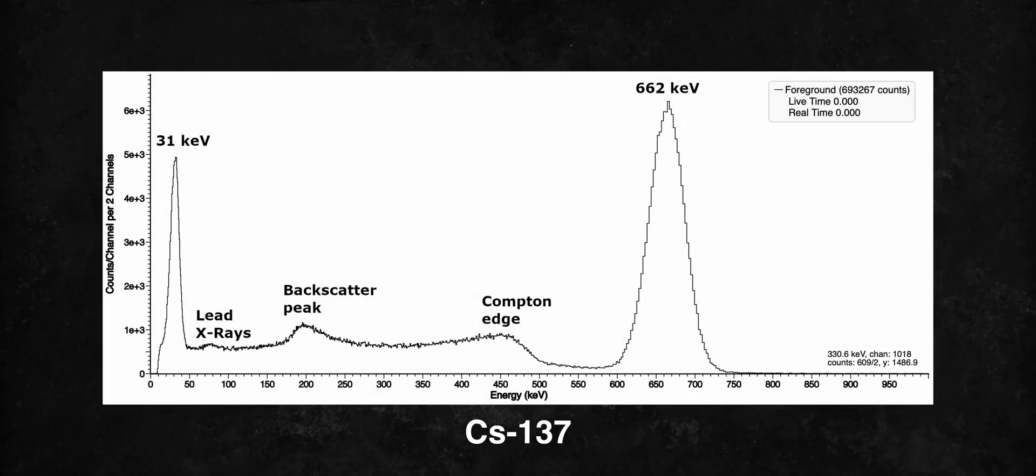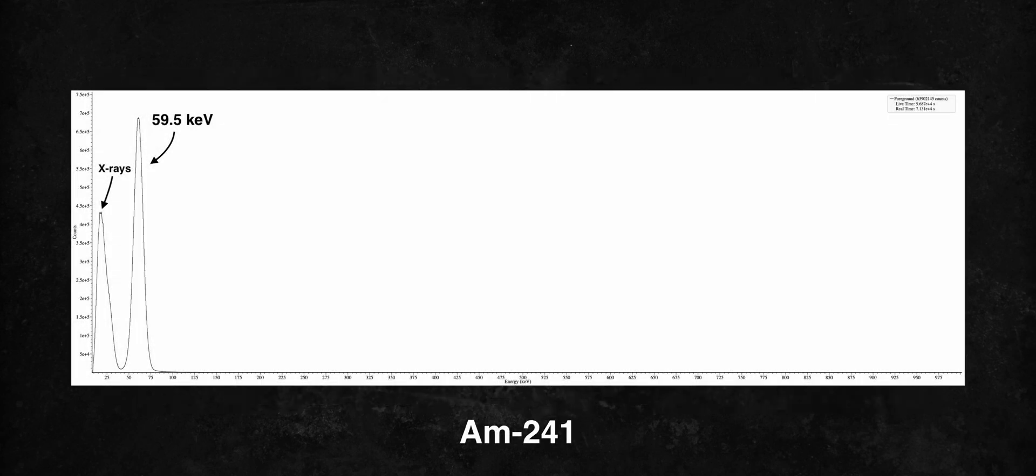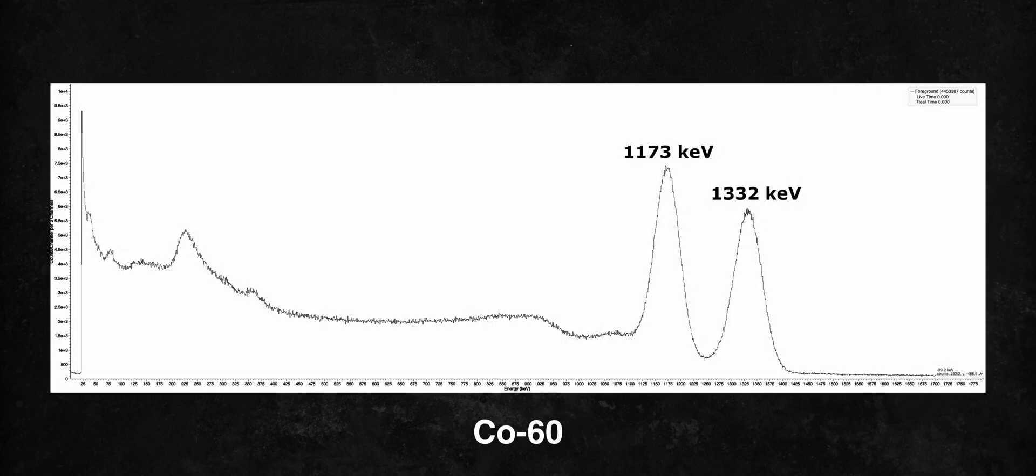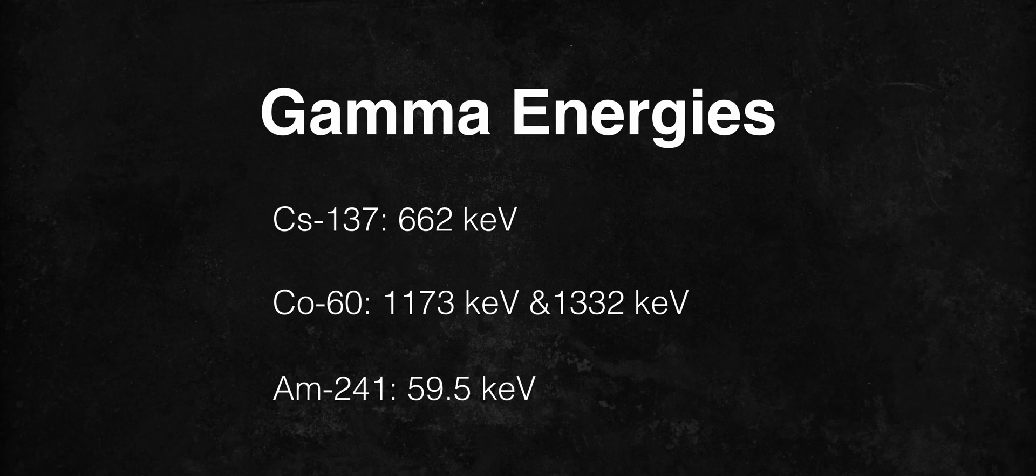Here's an example. Most Geiger counters are usually calibrated for cesium-137, which has gamma energy of 662 keV. Americium-241, on the other hand, has an energy of 59.5 keV, while Cobalt-60 has energies of 1173 and 1332 keV. This means that the dose emitted from these isotopes won't be presented accurately when measured with a Geiger counter that has been calibrated for cesium-137.